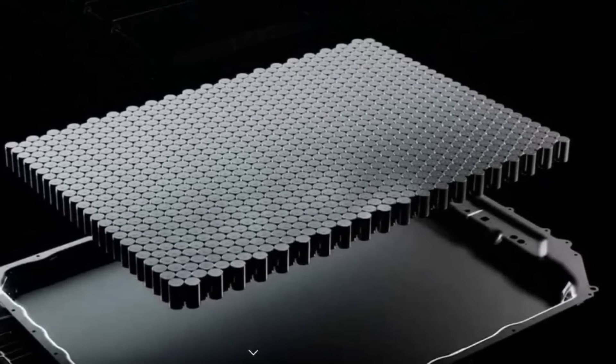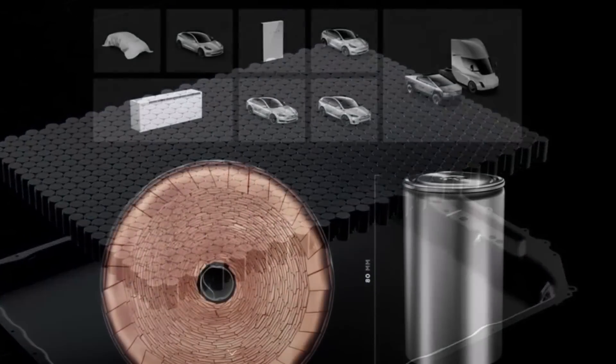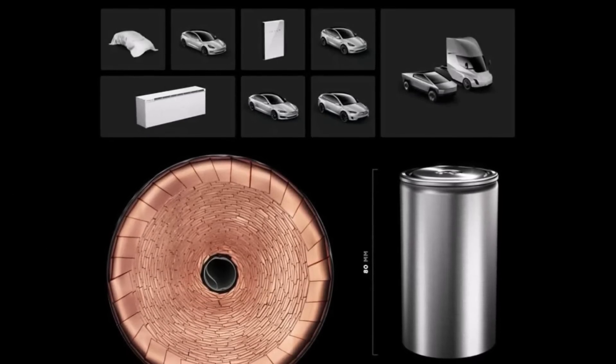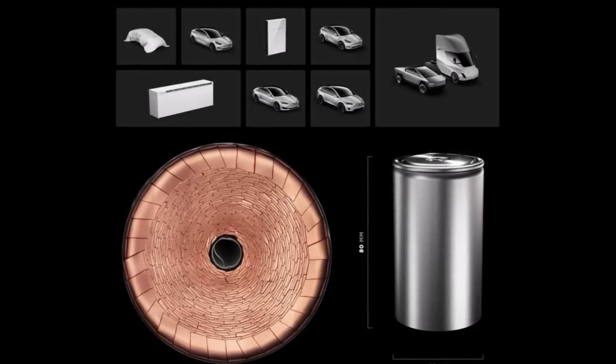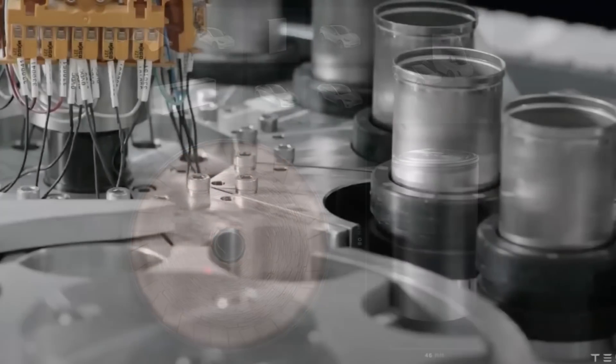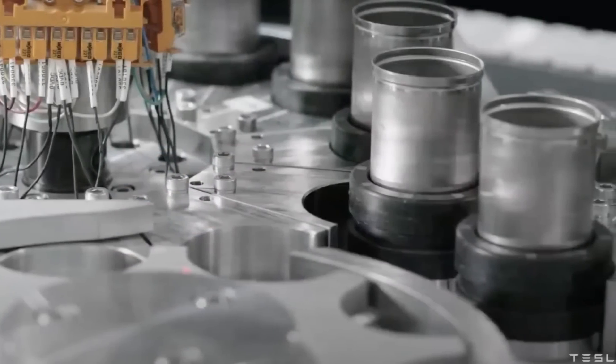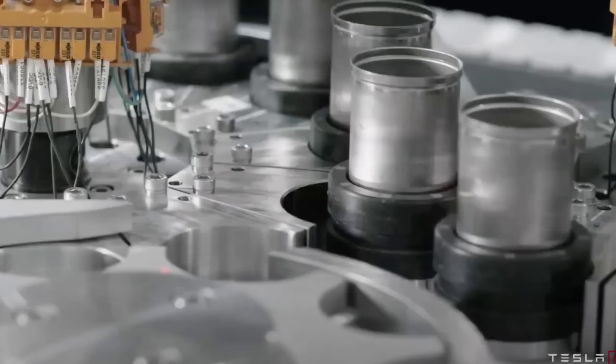Partly due to the use of nickel in the 4680 cells, which are extremely hard, some of the calendar rolls end up being dented. This was an issue that presented itself only in the pilot 4680 battery line, not during the bench and lab stages.